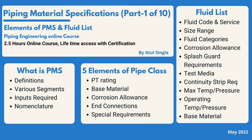First, we'll look at the basic definitions of Piping Material Specification. We'll look into various segments that PMS consists of. Then we'll see what the various inputs are to start developing this deliverable and where we get those inputs from. The most important part is nomenclature — how we define various pipe classes in a particular PMS and the various configurations we can have to recognize each and every pipe class.